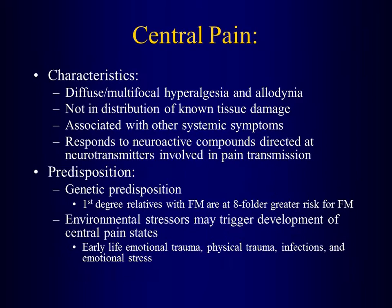How do you recognize central pain? What are the characteristics? First, it's usually diffuse and multifocal — the patient comes in, you ask where it hurts, and they say they hurt all over. Most people dismiss this, but it happens. It is not in the distribution of known tissue damage, so there isn't an obvious pain generator. Key: it is associated with other systemic symptoms. And it responds to neuroactive compounds directed at neurotransmitters. You can have genetic predispositions and environmental stressors that can trigger or exacerbate the problem.